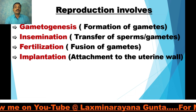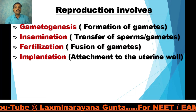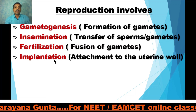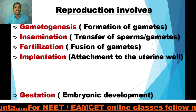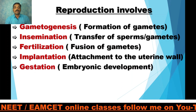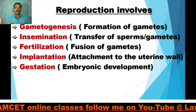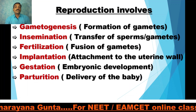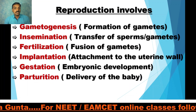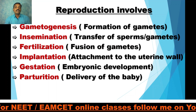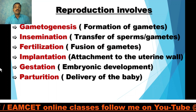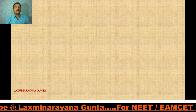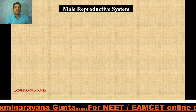After fertilization the zygote is formed. The zygote undergoes a series of divisions and attaches to the uterine wall. This attachment of the embryo to the uterine wall is called as implantation. After implantation the embryo starts developing organs and organ systems — this process is called as gestation. The delivery of the baby is called as parturition. All these events occur only after puberty.